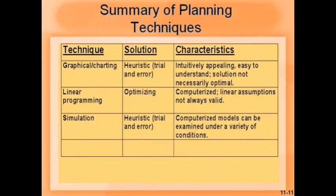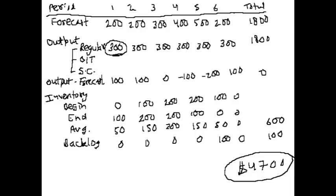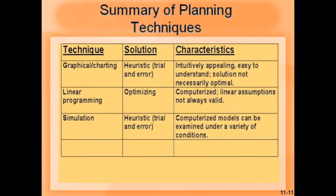There are different techniques people use, such as graphical and charting methods — trial and error. You try to change a few things and see what the total cost will be. It is intuitively appealing and easy to understand; the only issue is the solution is not necessarily optimal. In real life, a solution sometimes need not be optimal — more important is that it has to be practical. Because of that, people do not go for overly complicated mathematical models that may produce impractical solutions.